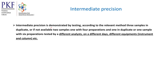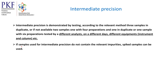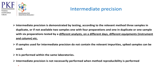Intermediate precision is demonstrated by testing according to the relevant method using three samples in duplicate, or if not available, two samples — one with four preparations and one in duplicate — or one sample with six preparations, tested by different analysts on different days using different equipment, instruments, and columns. If samples do not contain the relevant impurity, a spiked sample can be used. Intermediate precision is performed within the same laboratory. This is the key difference from reproducibility, which is performed between two labs. Intermediate precision is not necessarily performed when method reproducibility is performed.